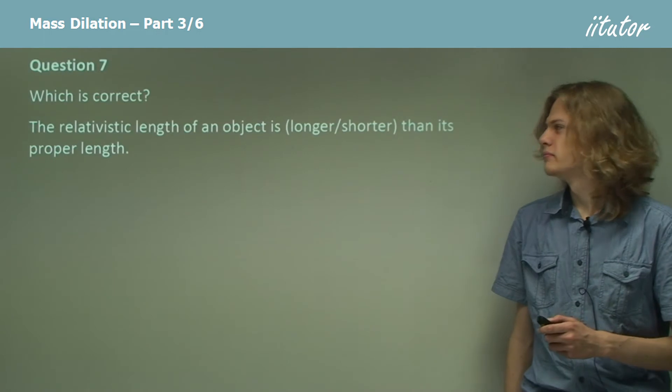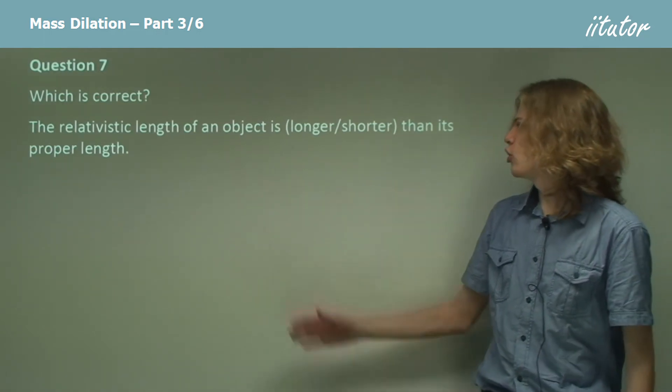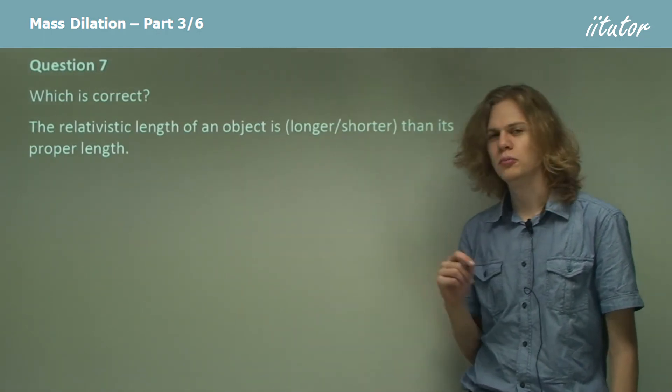Question 7. Which option is correct? The relativistic length of an object is longer or shorter than its proper length.